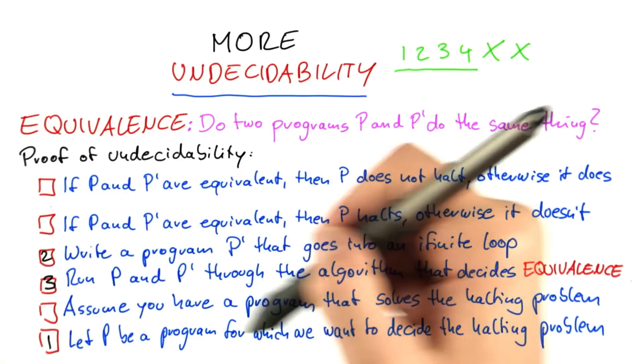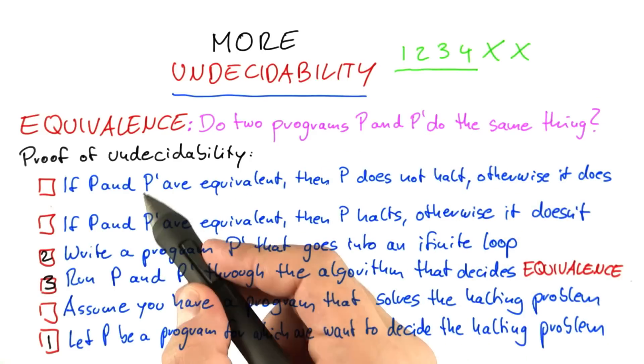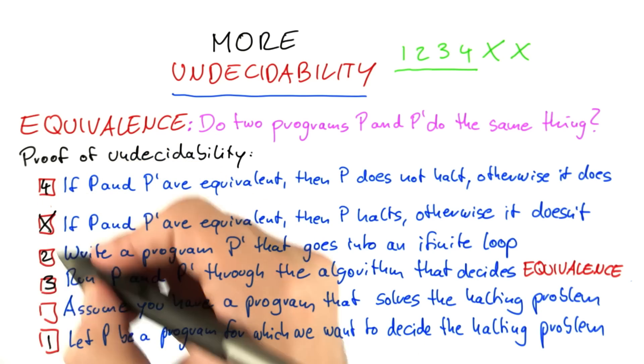And then, of course, that means if the two programs are indeed equivalent, then p will also go into an infinite loop because all that p' is doing is it always goes into an infinite loop. And we don't even need the other two building blocks